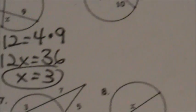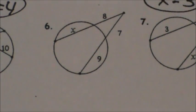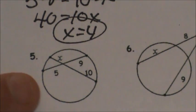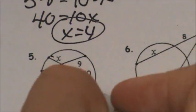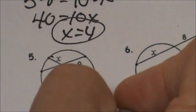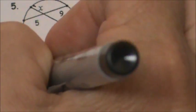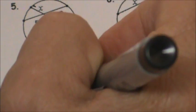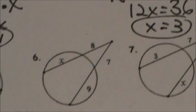You can try number 4, as those are all chord-chord problems. For number 5: 5 times 9 equals x times 10, so 45 equals 10x, giving x equals 4.5. There's another chord-chord example done.